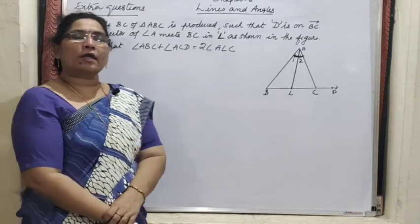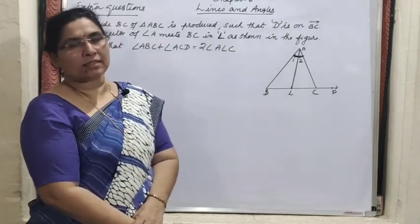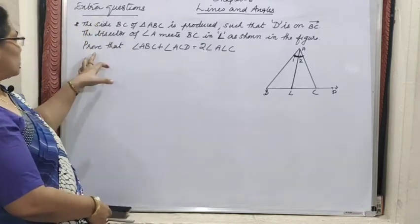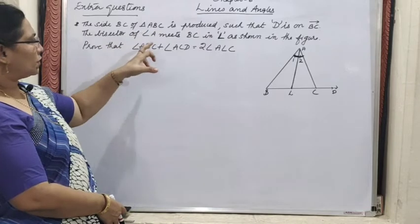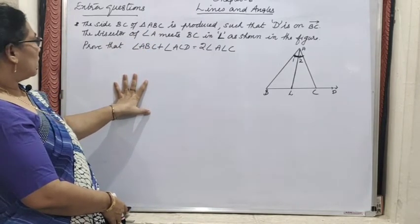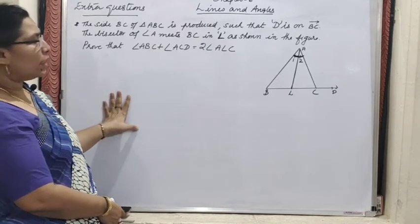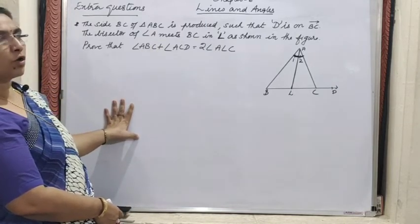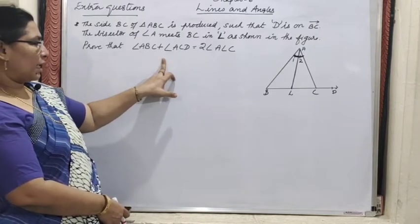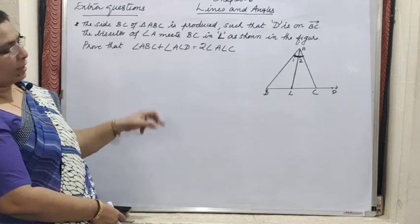Good morning children. We already completed chapter 6 lines and angles. Some extra questions we are going to do today. The first question: the side BC of triangle ABC is produced such that D is on BC. The bisector of angle A meets BC in L as shown in the figure. Prove that angle ABC plus angle ACD equals 2 times of angle ALC.